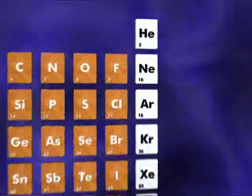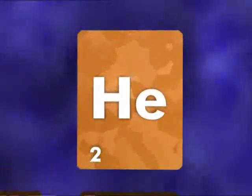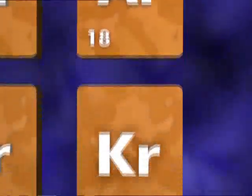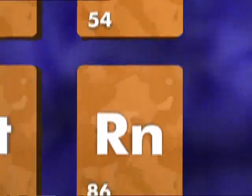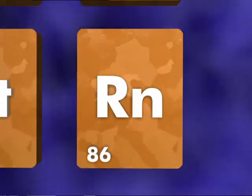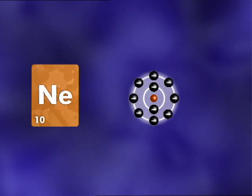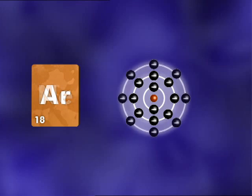The noble gases are found in group zero of the periodic table. There are six elements in this group: helium, neon, argon, krypton, xenon and radon. Their position in the table means they have a common electronic structure. Helium has a full outer shell of electrons, as does neon. Going down the group, there's always a stable outer shell of electrons. This makes the noble gases very stable and unreactive, which also makes them extremely useful.